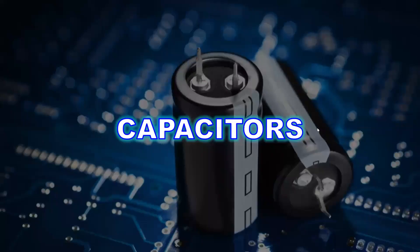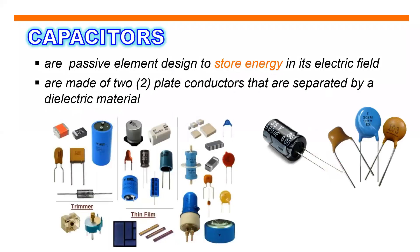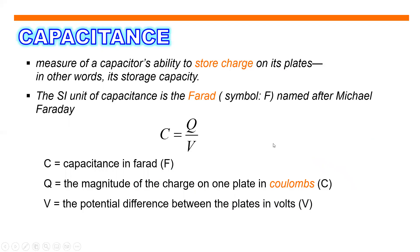Now we're going to talk about capacitors. Capacitors are a passive element designed to store energy in its electric field. They are made of two plate conductors that are separated by a dielectric material. Capacitance is a measure of a capacitor's ability to store charge on its plates — in other words, its storage capacity.